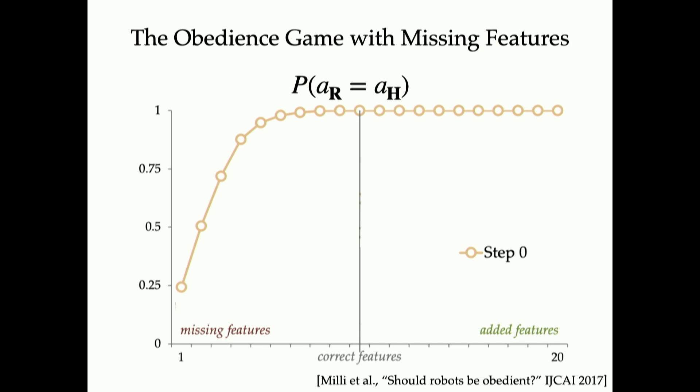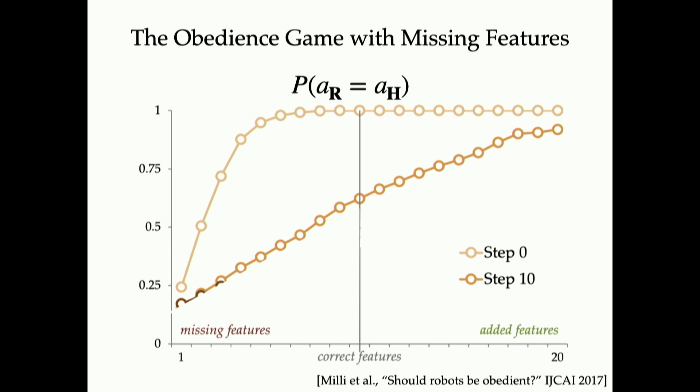So what we have here is down on the left, you're missing features, where there are things you've left out of the specification. What I'm showing here is in the very first round of the interaction, the system actually doesn't do what you ask it to if you only have one feature that's included. Over time, if you have too many features, things kind of correct out. But in this missing features area, we see these persistent failures. And that seems to show up persistently over time as we continue.